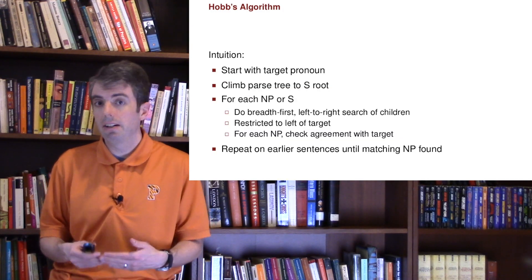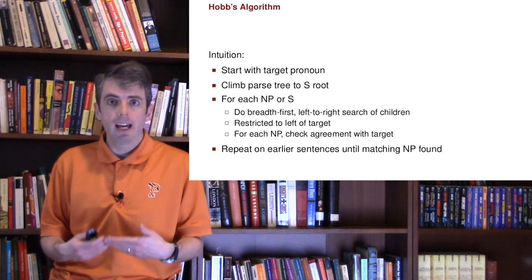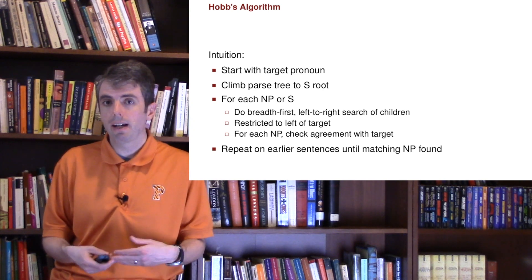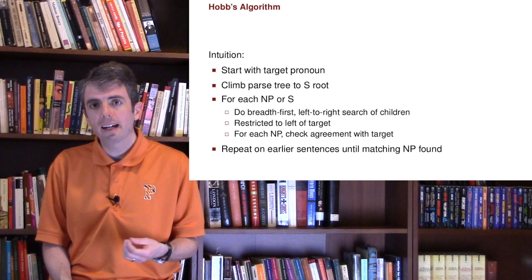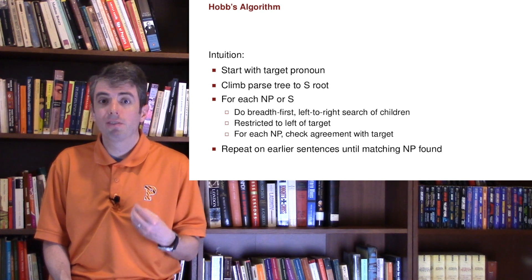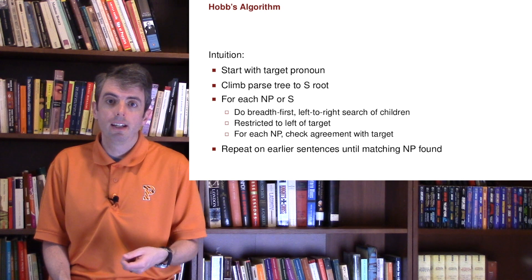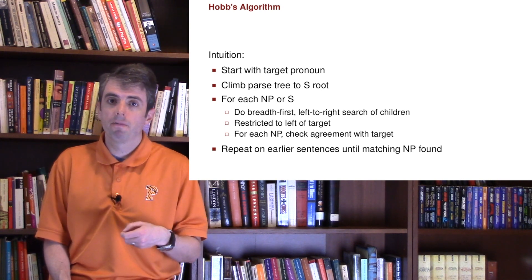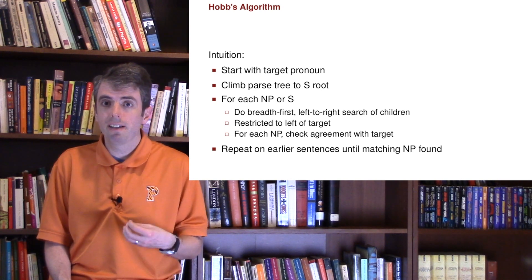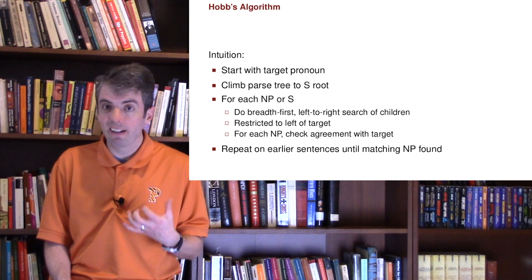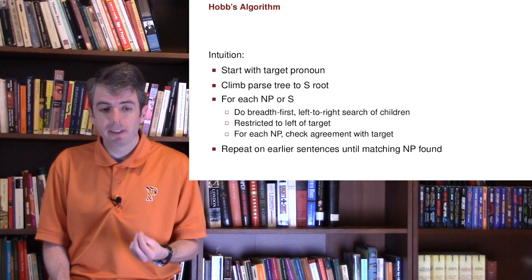Let's start with an algorithm to solve the co-reference problem. This is called Hobbs' algorithm, and it assumes that you have trees that represent the syntactic structure of the sentence. These syntactic structures have clauses, and each clause can be a noun phrase or a verb phrase, encoding what is the main word of that clause.